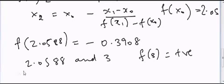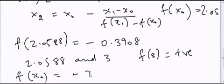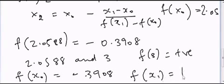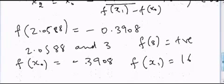So now again we will go for another approximation equation and we can calculate, so f of x0 is equal to negative 0.3908 and f of x1 is equal to 16.